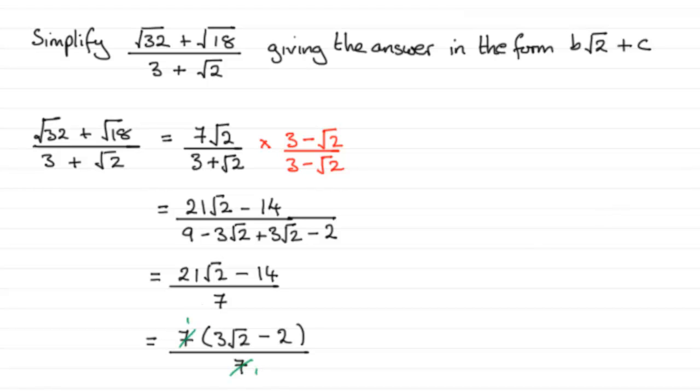So we've got this now in the form that we required, b root 2 plus c. In other words, we've got 3 root 2 minus 2. If we were asked to state what b was, b would be 3, and what is c? Well c would be minus 2, we're adding minus 2, and they would be our two integers.